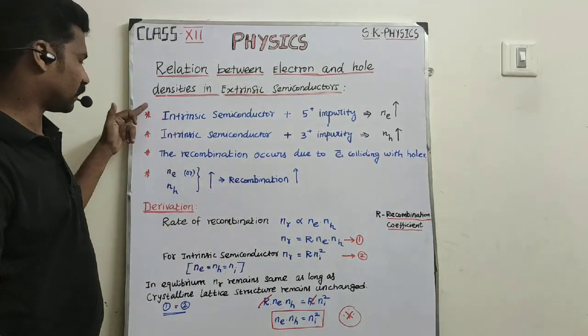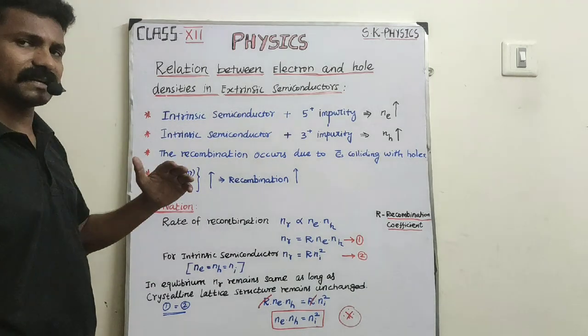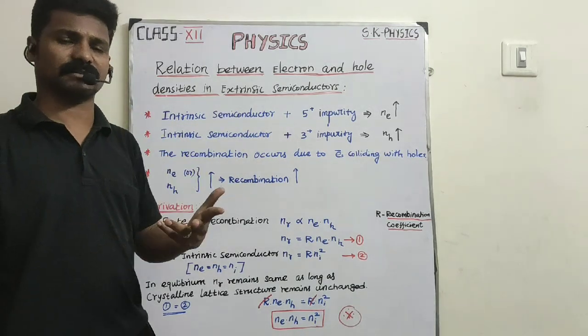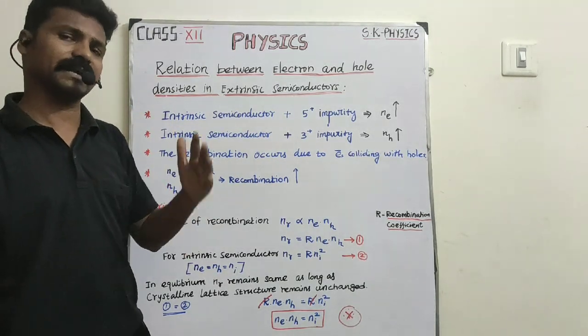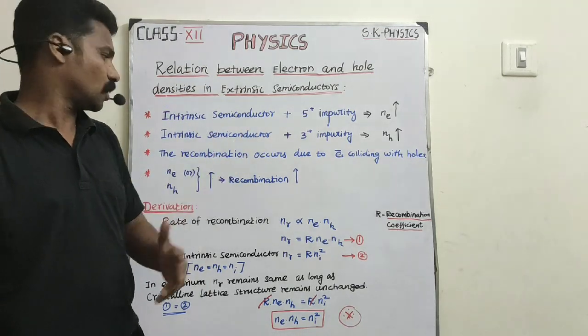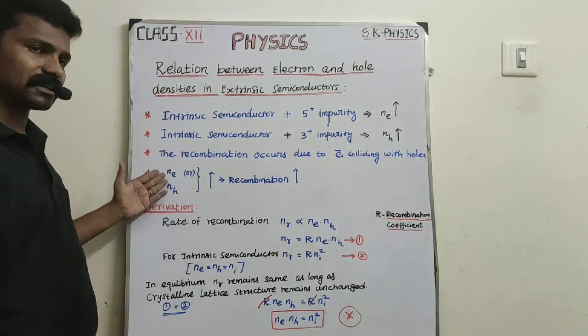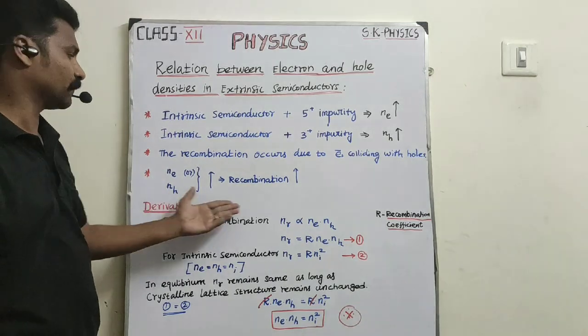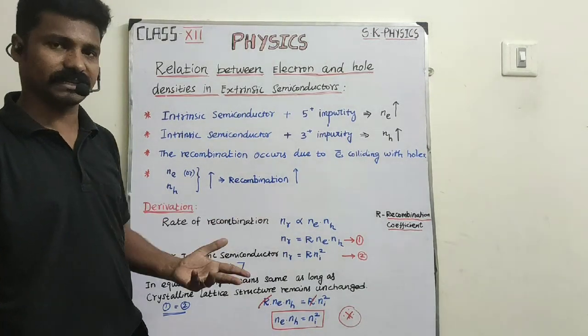Therefore, whether first case or second case, generally recombinations occur. The recombination is nothing but electrons colliding with holes. So whether the electron value is increasing or holes value is increasing, the recombination rate also increases.